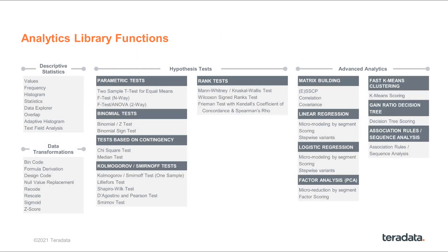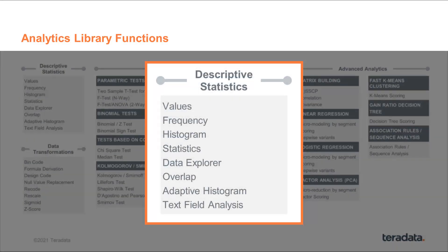Let's look at this functionality at a more granular level, starting with descriptive statistics. Values gives you basic data quality — how many nulls, how many unique values, positives and negatives. Frequency gives you distributions of categorical data, while histogram gives you distribution of your continuous data. Univariate statistics provides the basics — min, max, mean, and standard deviation — through much more complex calculations such as variance, coefficient of variance, percentiling, deciling, and ranking your top five and bottom five and modes.